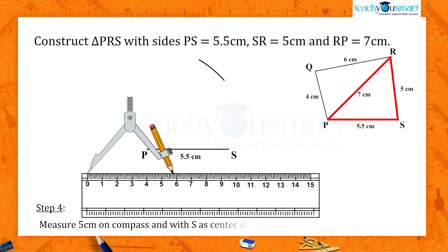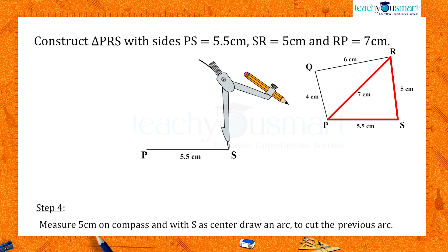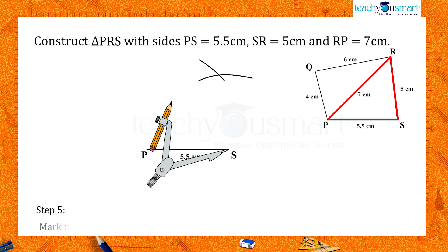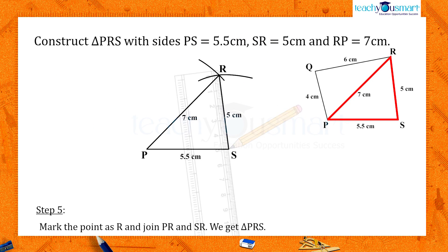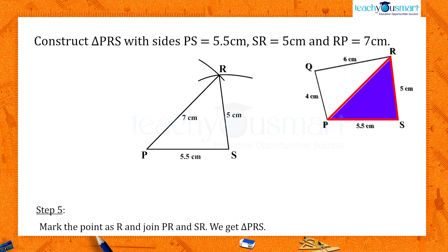R is 5 centimeters away from S. With S as the center, draw an arc of radius 5 centimeters to cut the previous arc. Mark this point as R and join PR and SR. So we get triangle PRS.